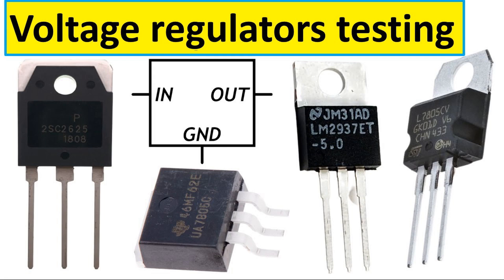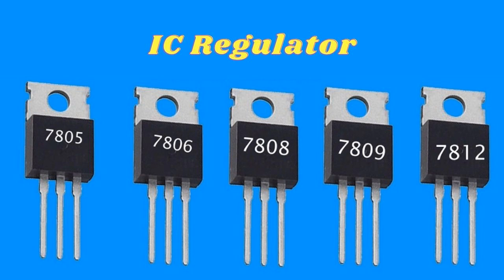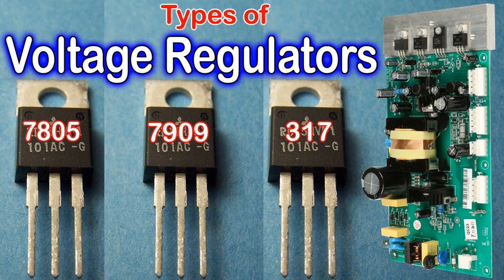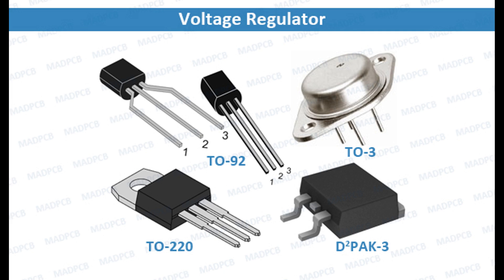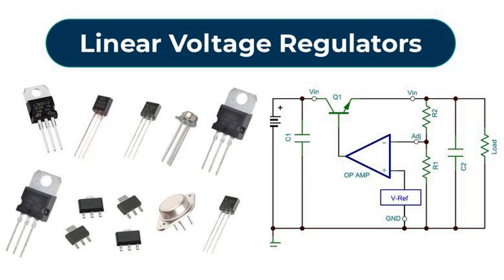The feedback loop in a voltage regulator IC is a crucial mechanism that continuously monitors the output voltage and adjusts the control element to maintain a stable and precise output voltage. Output voltage monitoring: The output voltage of the regulator is monitored using a feedback network, which may consist of resistors, capacitors, and sometimes additional components like operational amplifiers. It senses the output voltage and provides feedback to the error amplifier. The feedback network sends information about the difference between the output voltage and the reference voltage to the error amplifier, which generates an error signal proportional to the deviation. The error signal is then used to adjust the control element, altering the flow of current through the circuit to modify the output voltage to match the reference voltage.